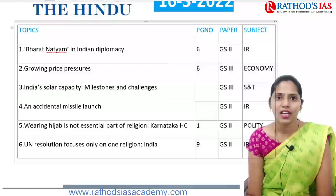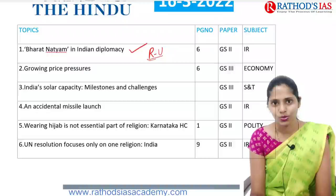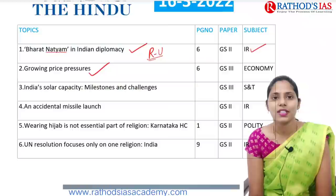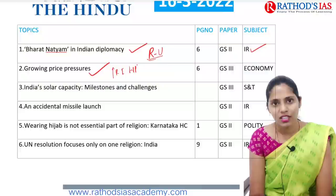First, it is regarding Bharatanatyam in Indian diplomacy — specifically India's stand on the Russia-Ukraine issue. This is important from International Relations, which mainly comes in GS Paper 2. Next topic is regarding growing price pressures — today's lecture covers increasing retail inflation as well as wholesale price inflation, based on an editorial in today's newspaper, important from economy.